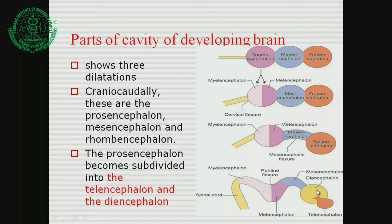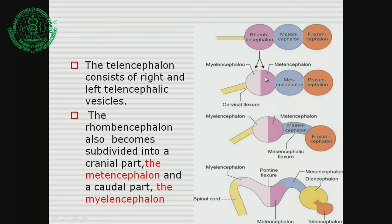The prosencephalon is divided into two parts: the diencephalon, from which the thalamus and hypothalamus develop, and the telencephalon, from which the cerebral hemispheres develop. The telencephalon consists of right and left telencephalic vesicles. The rhombencephalon's cranial part is the metencephalon and its caudal part is the myelencephalon.